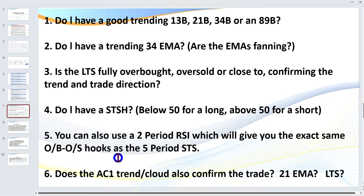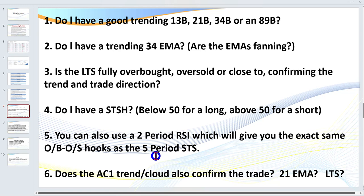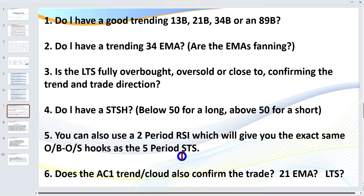Instead of a short-term stochastic, you can also use a two-period RSI. Larry Connors said that if there was only one indicator he could have, it would be a two-period RSI. Coincidentally, the two-period RSI matches exactly the top five-period short-term stochastic. When you're in between the 80/20 area — what I call no-man's land — you'll tend to find the two-period RSI gives you straight lines, whereas the short-term stochastic gives you waves.